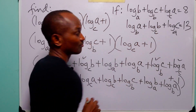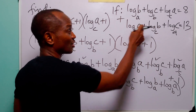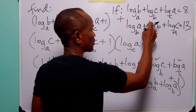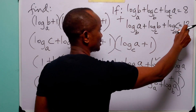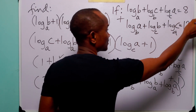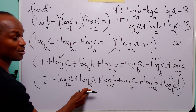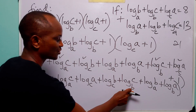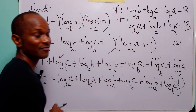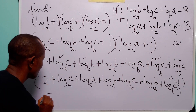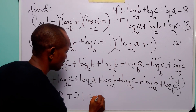Now looking at the two conditions given, if we add them we get: log to base a of b plus log to base b of a, plus log to base b of c plus log to base c of b, plus log to base c of a plus log to base a of c, which equals 8 plus 13 = 21. This whole left-hand side matches our collected terms, so the answer is 2 plus 21, which equals 23.